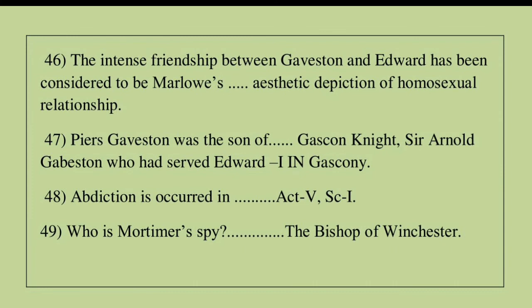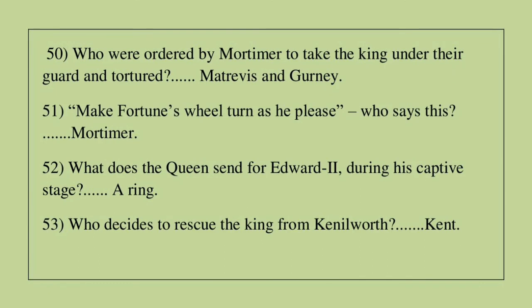Question 45: Whose text of Shakespeare is compared to Edward II? The answer is Henry VI Parts 2 and 3, and Richard II. Question 46: The intense friendship between Gaveston and Edward has been considered to be Marlowe's aesthetic depiction of a homosexual relationship. Question 47: Piers Gaveston was the son of a Gascon knight, Sir Arnold Gaveston, who had served Edward I in Gascony. Question 48: The abdication scene occurs in Act 5, Scene 1. Question 49: Who is Mortimer's spy? The answer is the Bishop of Winchester.